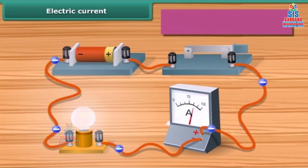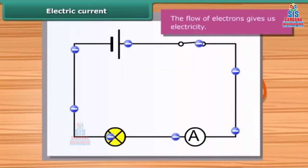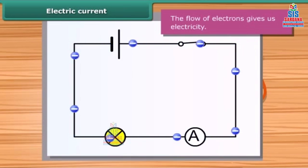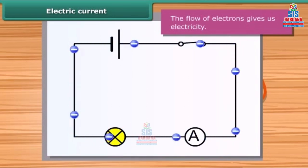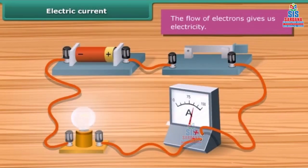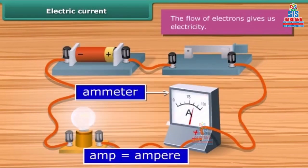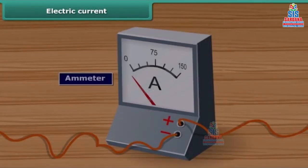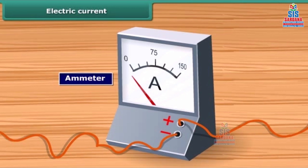An electric current consists of a movement of negative charges — that is, electrons. The flow of electrons gives us electricity. Electric current is measured by an ammeter.